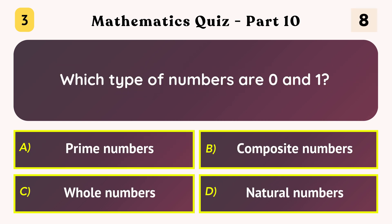Which type of numbers are zero and one? Whole numbers.